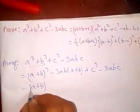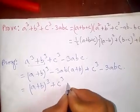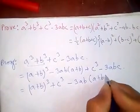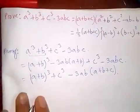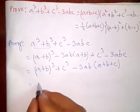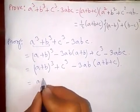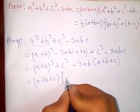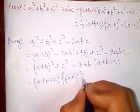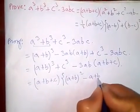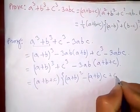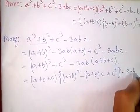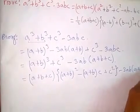This gives (a + b)³ + c³, minus 3ab(a + b) - 3abc. Now applying the sum of cubes formula: (a + b + c) times [(a + b)² - (a + b)c + c²], minus 3ab(a + b + c).